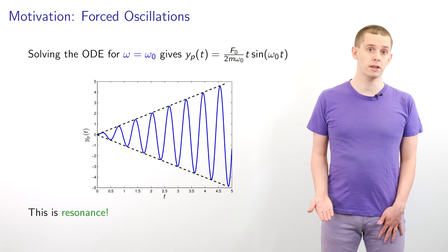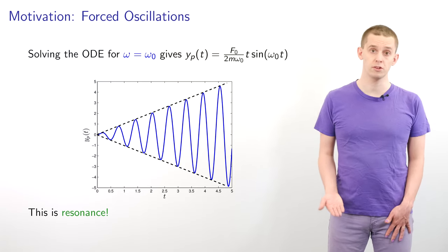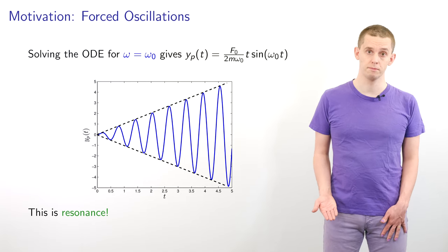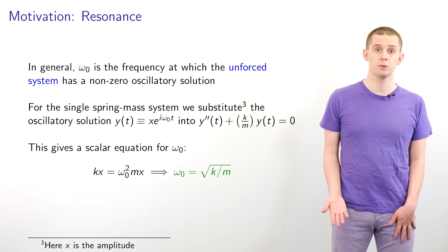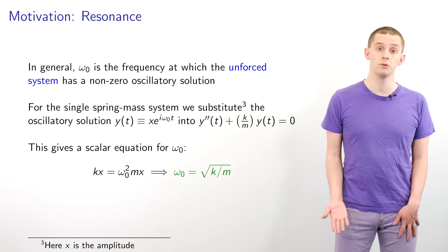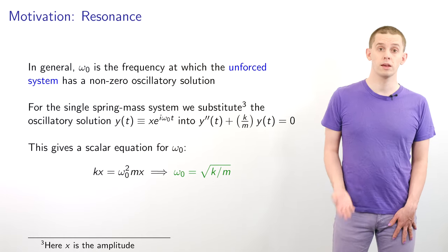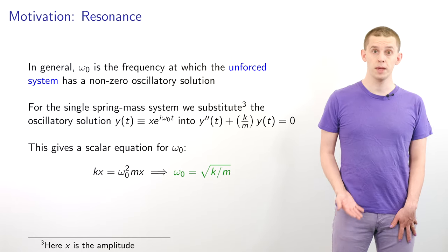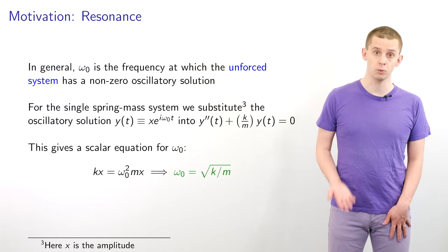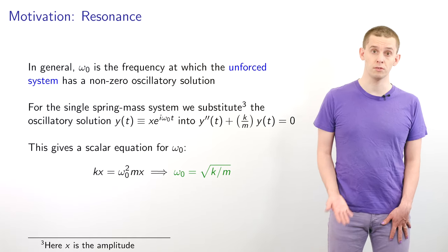This is a mathematically idealized case where we don't have any damping term. If we applied a damping term, that would limit the size of the oscillations. Without this damping term, the size of the oscillations will be unbounded. In general, omega_0 is the frequency at which the unforced system has a non-zero oscillatory solution. For the single spring-mass system, we can substitute the oscillatory solution y of t equal to x times e to the i omega_0 t into the ODE to obtain the scalar equation: k times x equals omega_0 squared times m times x. From here we can obtain omega_0 equals the square root of k divided by m. Looking at this scalar equation, we can see that it has some similarity to the definition of eigenvalues and eigenvectors, if we associate x with being an eigenvector and omega_0 squared with being an eigenvalue.